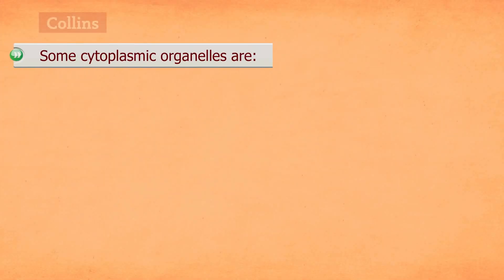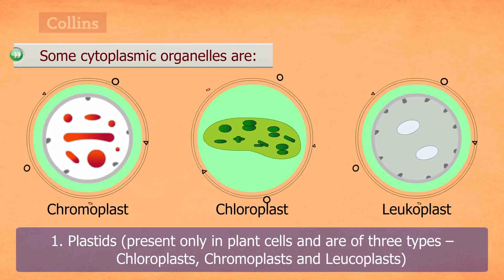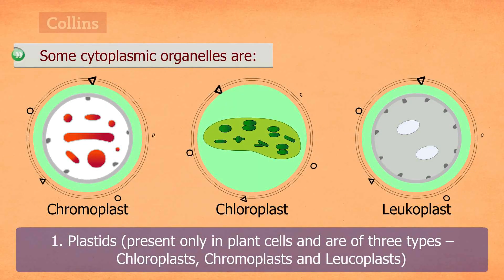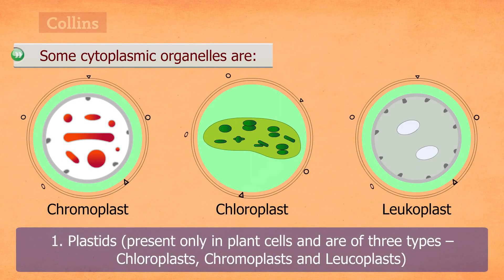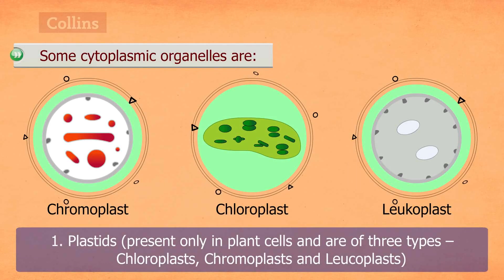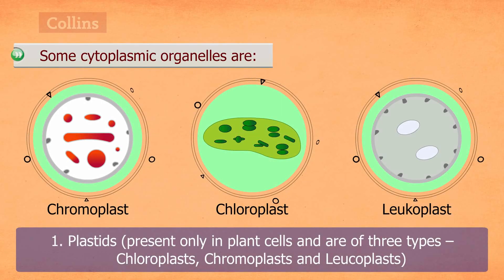Some cytoplasmic organelles are Plastids. These are present only in plant cells, and depending on the pigment color, plastids are of three types: chloroplasts, chromoplasts, and leukoplasts.